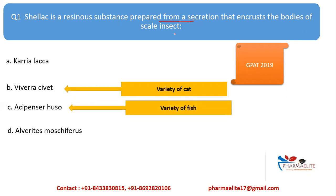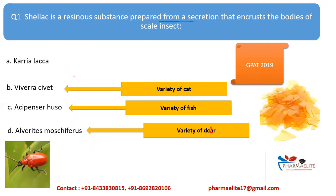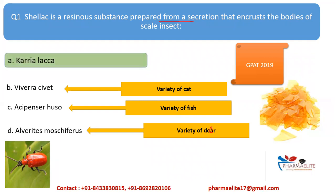Civet is a variety of cat, Acipenser is a variety of fish, and Moschus moschiferus is a variety of deer. So all of these being species of cat, fish, and deer, the only one which is a species of insect is option A. This is the insect which gives us shellac — the resinous material obtained from the scales of insects. So Kerria lacca is the correct answer.